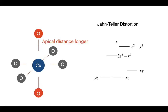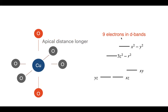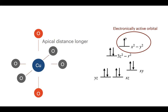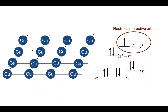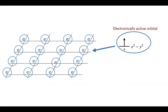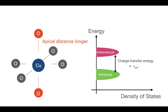Most cuprate superconductors are some variation with nine electrons in the d bands. You fill most orbitals and end up with one electronically active anti-bonding orbital around the Fermi level. This is what people model in DMFT, QMC (quantum Monte Carlo), etc. — a 2D lattice of copper atoms, each with one electron per orbital, maybe hole- or electron-doped, and you perform calculations on that.